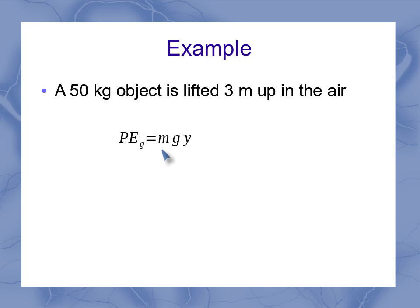Well, if I go back to my equation here, what I see is that my 50 kilograms gets plugged in for m, my three meters gets plugged in for y, and g is a value that's a constant, so we know that on Earth it's 9.8 meters per second squared.